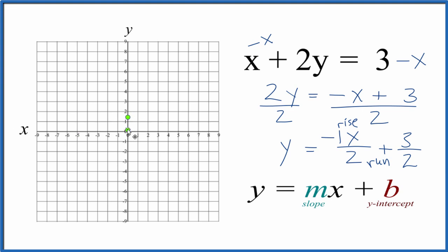So we go to our point, we're going to rise negative 1 and run 2. So when we say negative 1, if we're rising 1, we go up, but negative 1, we're going to go down 1 and then run. That means move to the right, 1, 2.